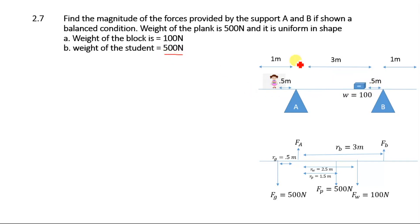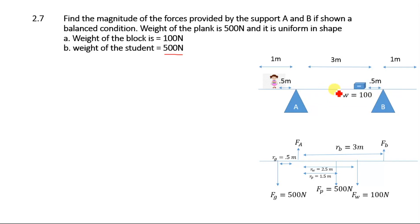The total length of the plank is 1 plus 3 plus 1, equal to 5 meters. The distance of the girl from support A is 0.5 meters. The distance of the block from support B is 0.5 meters, and the distance of the block from support A is 2.5 meters, because the distance from here to here is 3 meters — 3 minus 0.5 gives 2.5 meters. The center of mass of the plank is at the midpoint: 2.5 meters, which is 1.5 meters away from support A.